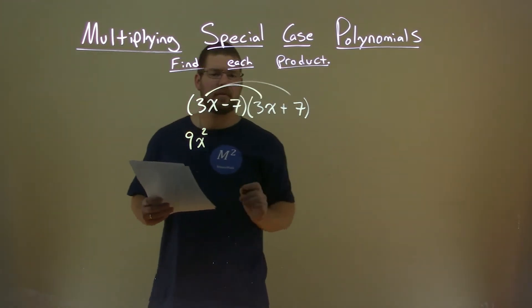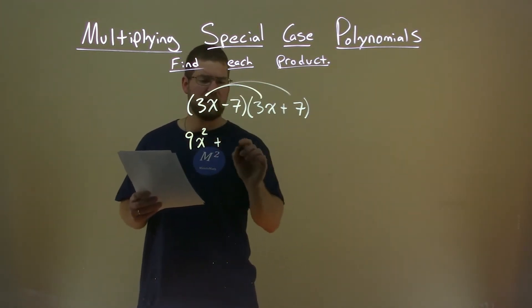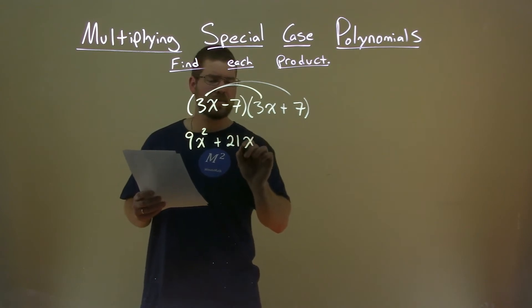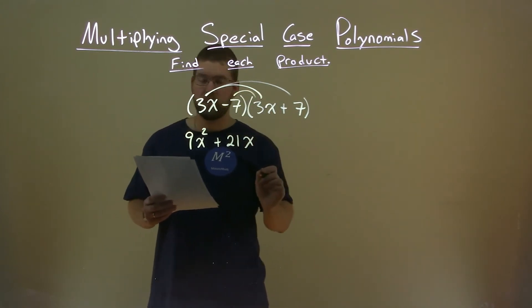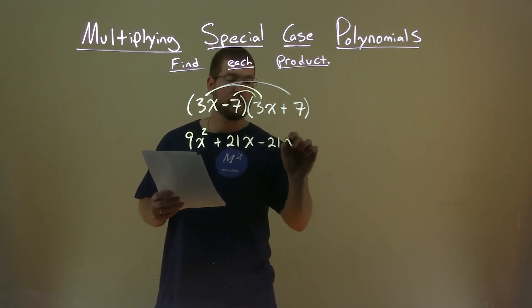3x times 7, well, 3x times 7 is 21x. Negative 7 times 3x is minus 21x.